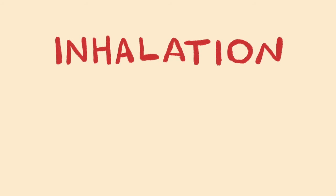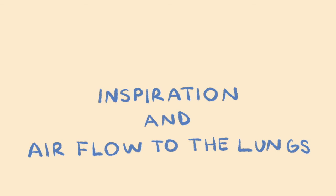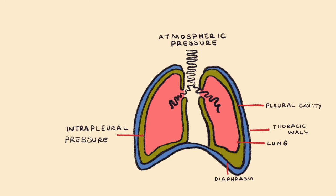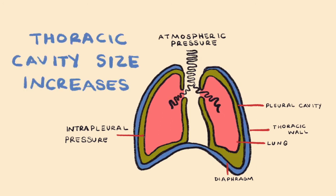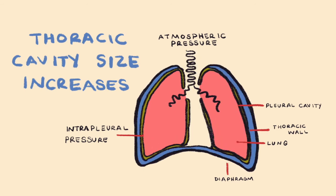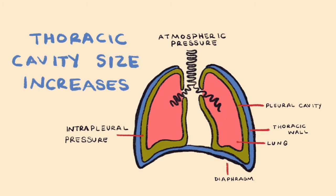Let's start with inhalation, also known as inspiration, or air flow into the lungs. During inhalation, the thoracic cavity size and thoracic cavity volume increases as the diaphragm contracts downwards and the external intercostal muscles contract. When the thoracic cavity size increases as a result of these muscle contractions, the lungs will inflate because the negative intrapleural pressure will make the lungs stick to the thoracic cavity wall. So when the thoracic cavity increases in volume, so do the lungs.